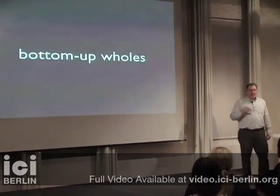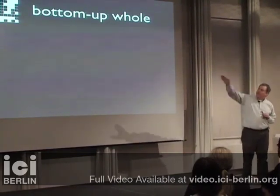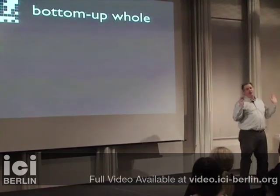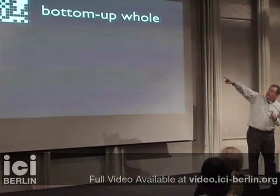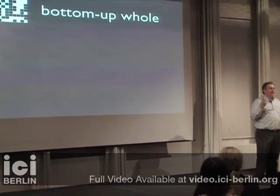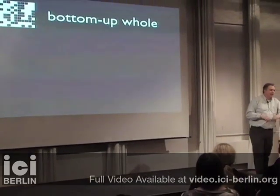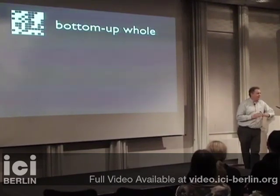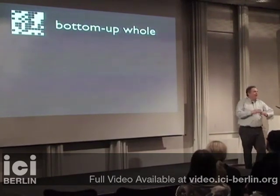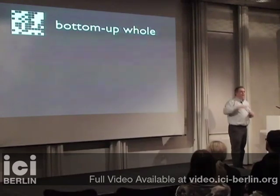Let me start by saying something about bottom-up wholes. I use that little picture on the left there just to suggest we're talking about bottom-up wholes. The issue is: what's the relationship between a whole and its parts? Here's a picture of something — not anything in particular — but it has a number of cells, and I will think of those as the parts. The whole will be some larger pattern involving those parts. That's just a mnemonic to suggest we're talking about wholes that are made up out of parts.